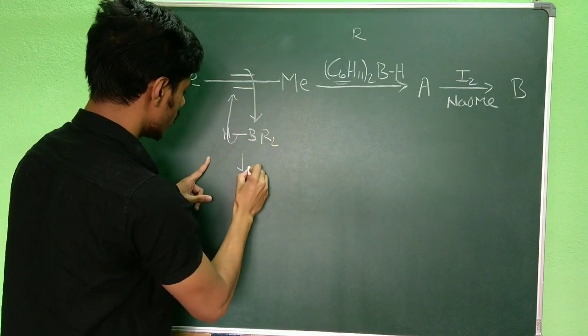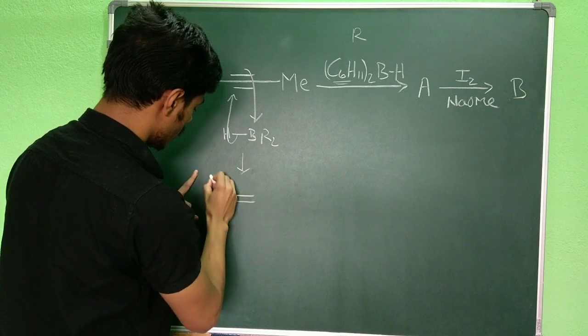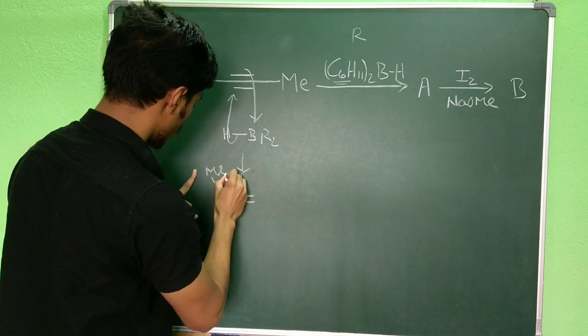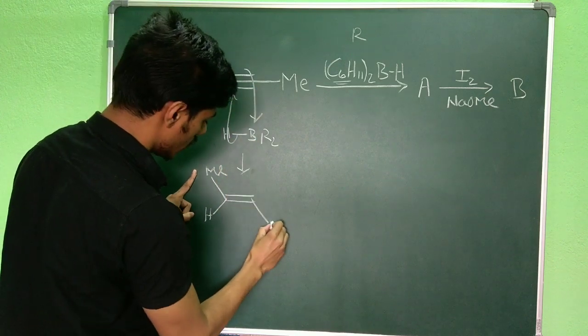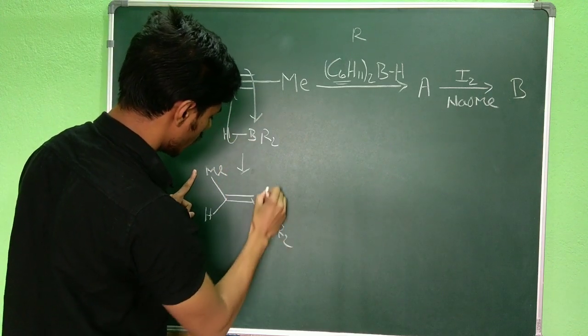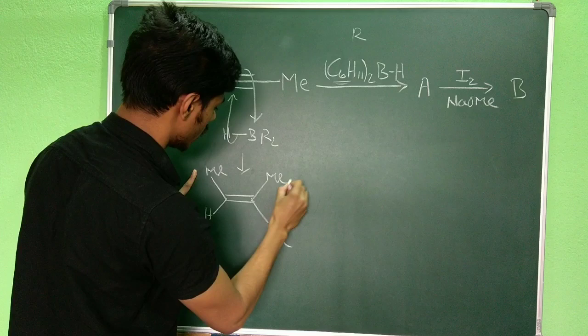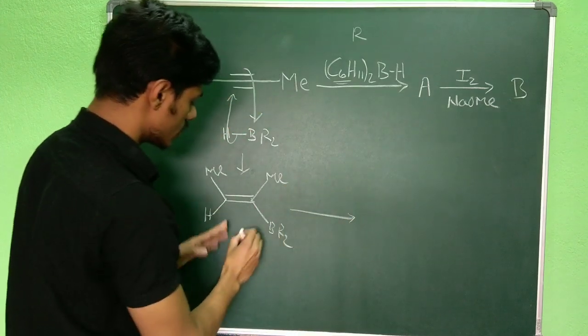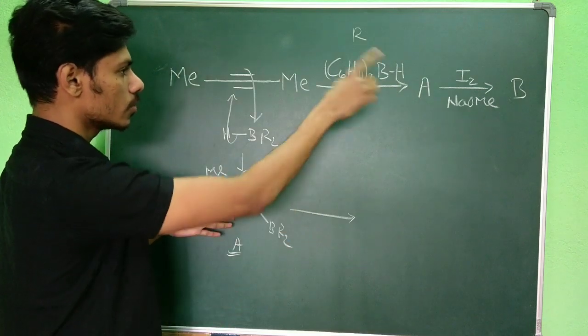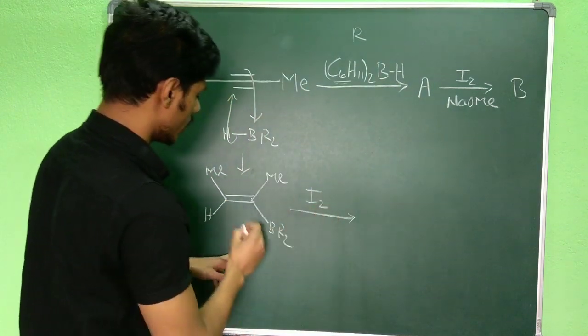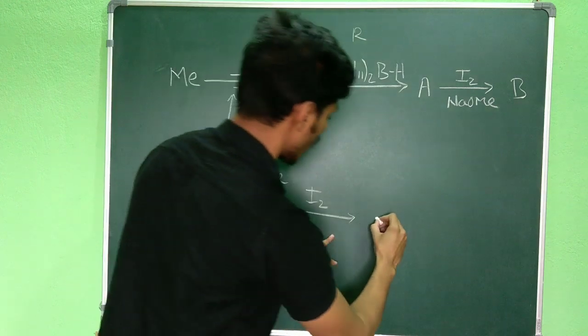If hydroboration reaction takes place here, I am representing this large group by R. So let's see, it is R2. If the hydroboration reaction occurs what you will get: you will get this - here you will have the methyl group, here hydrogen. This hydrogen is going here, here you have BR2.